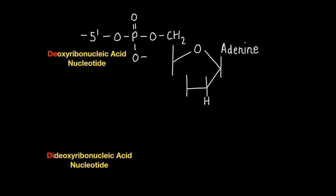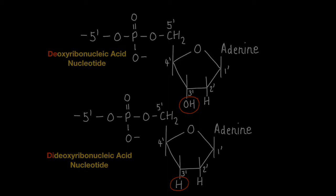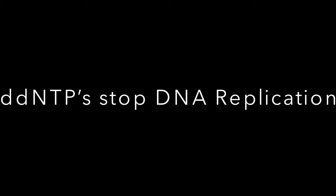Now, the main difference structurally between DDNTPs and the normal deoxyribonucleic acid nucleotides is that the dideoxyribonucleic acid nucleotides do not have a hydroxyl group on carbon number three. But the most important thing that you need to know is that dideoxyribonucleic acid nucleotides, or DDNTPs, stop DNA replication.